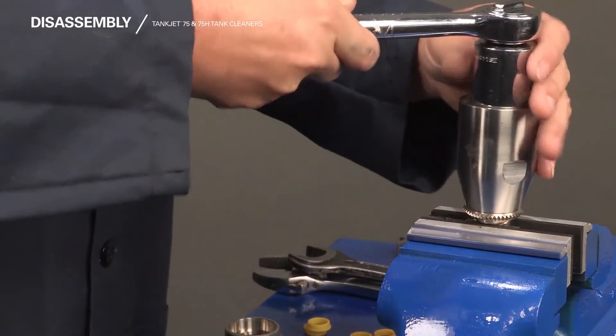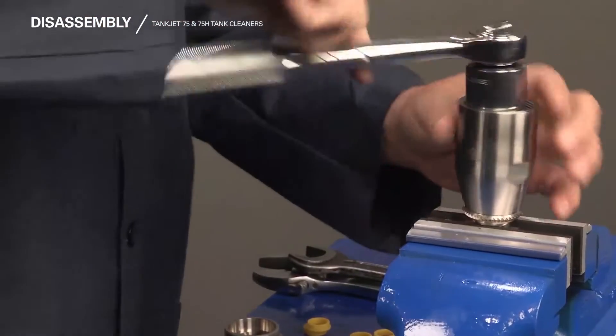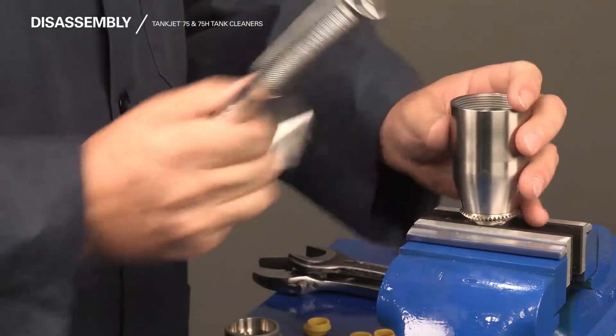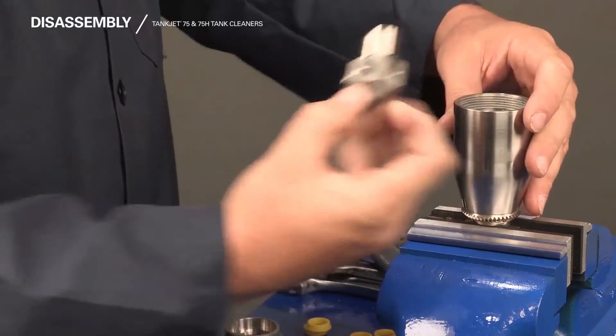With a 1 1/8 inch deep socket, remove the vertical shaft. Once removed, remove the bushing and then the washer.